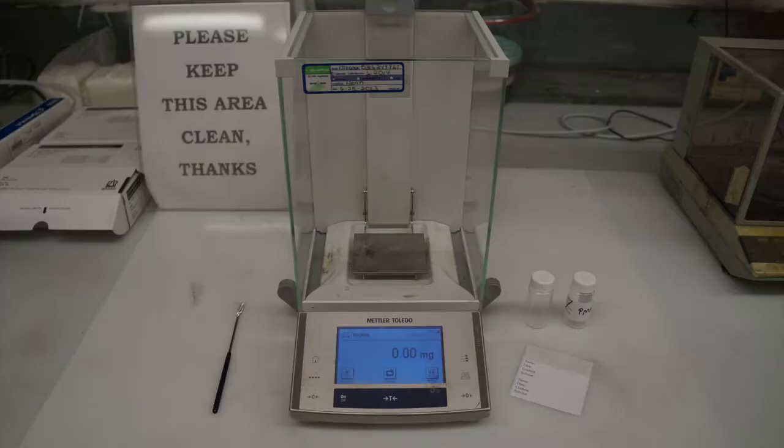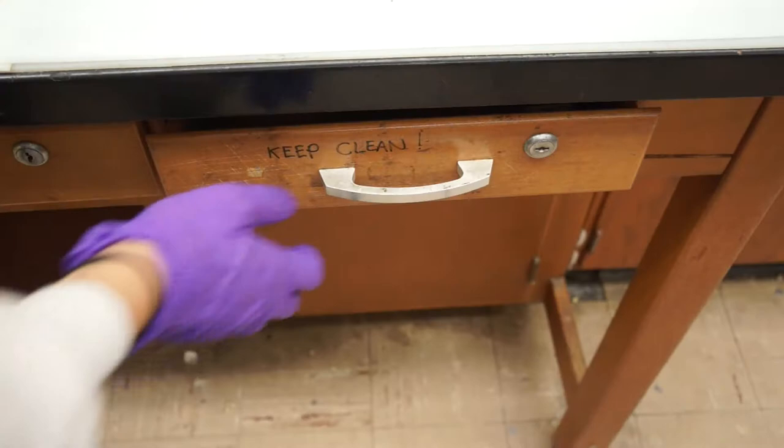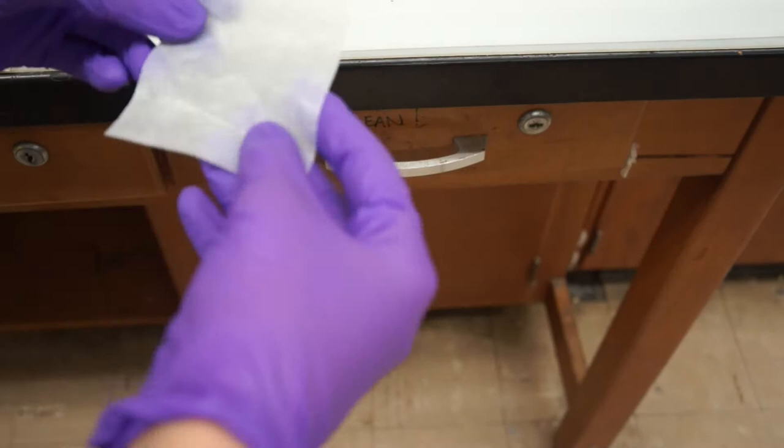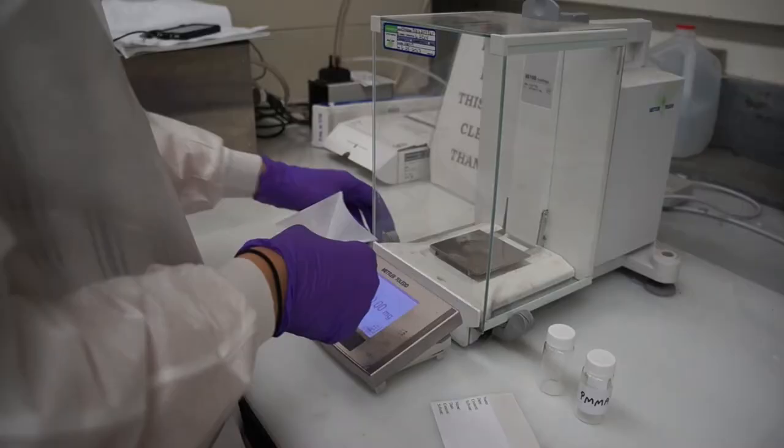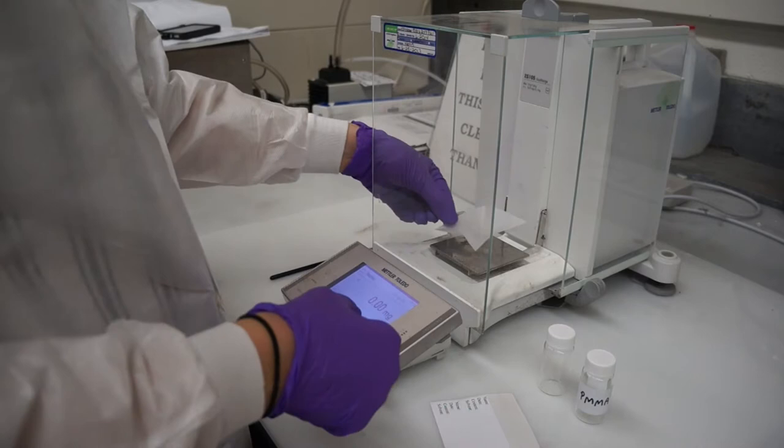Let's weigh an appropriate amount of PMMA for our solution. You'll need some weighing paper. I like to fold it along its diagonals to make it shaped sort of like a boat. This way when you're moving the paper around, the PMMA won't slide off really easily. Now place your weighing paper on your scale, close the door, and zero the scale.